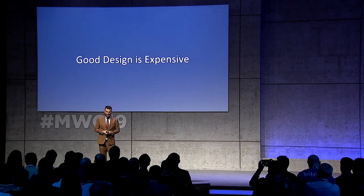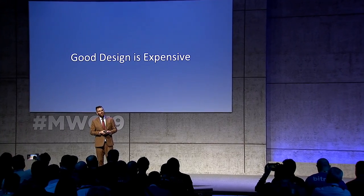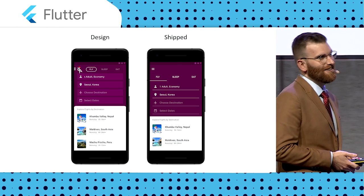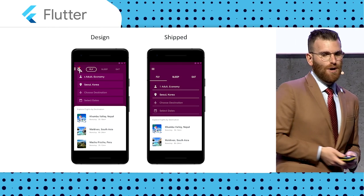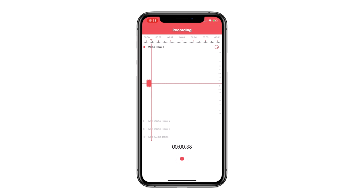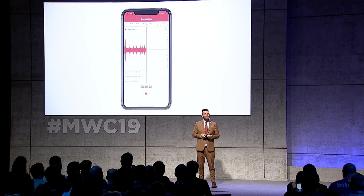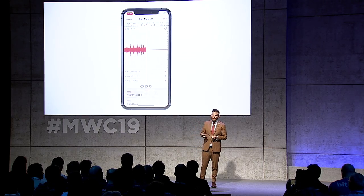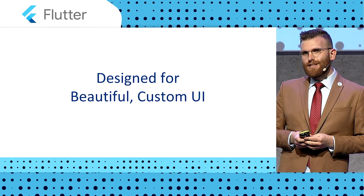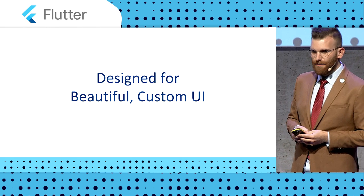Right now, good design is expensive — especially on mobile. It takes extra engineering resources to execute, and what you want is rarely what you get. The designer hands us something detailed and beautiful, but we push back on what makes it special. What gets me excited about Flutter is that we can break that cycle — we can ship the app we really want, with detail and polish and fewer of those painful compromises. Flutter's architecture is designed for building beautiful custom UI, and Flutter's main goal is to make building polished custom app experiences easier for developers and designers.